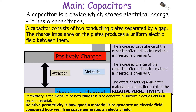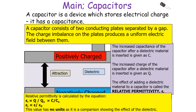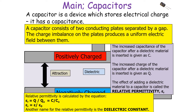As permittivity is a measure of how difficult it is to generate a uniform electrical field in a certain material, the relative permittivity is how good a material is at generating an electrical field compared to free space. As a result, the relative permittivity will be Q/Q₀, or C/C₀, or E/E₀. This value has no units because it's a comparison showing the effect of the dielectric. The higher the relative permittivity, the better insulated the dielectric material is. Another name for the relative permittivity is the dielectric constant.